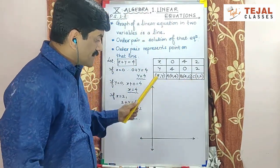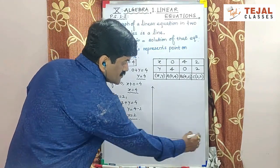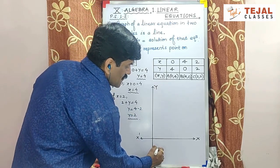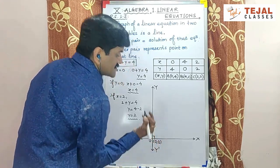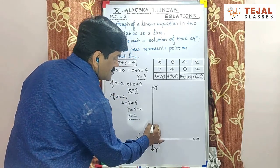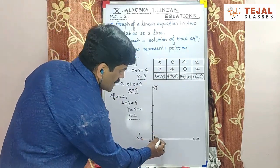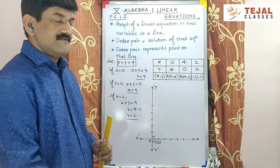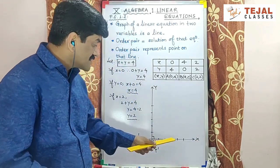यह तीनों points यहां पर plot किये जाएंगे और फिर उनसे एक line pass होगी. Both horizontal line is called as x-axis, and vertical line is called y-axis. Both the lines intersecting each other is known as origin. Coordinates of origin are always (0,0). सारे के सारे points positive हैं, इसलिए y-axis towards positive और x-axis towards positive draw करके show किया है. Highest numerical digit 4 है, so scale up to 5 is sufficient.